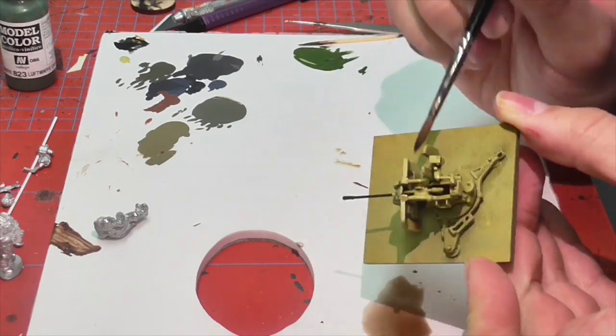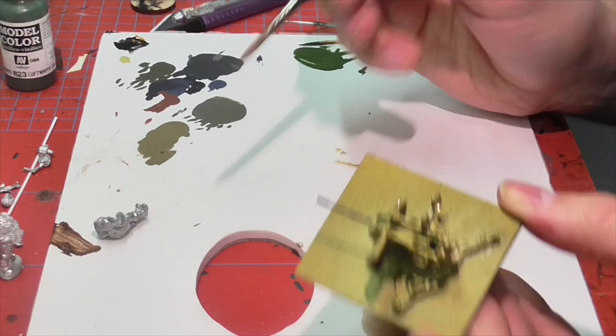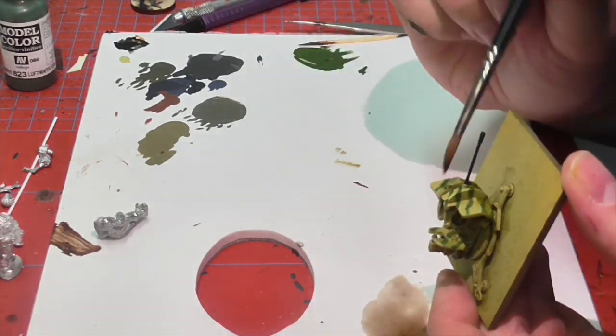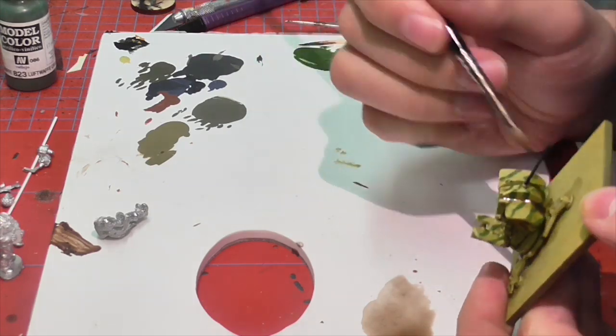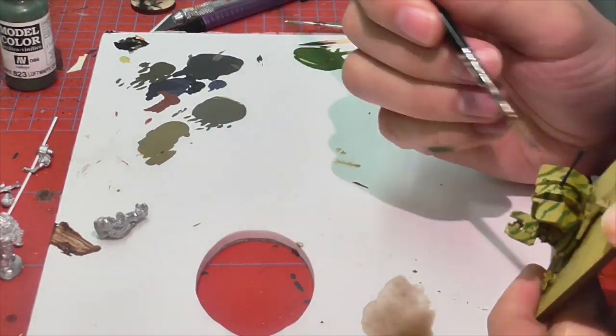And obviously you want to make sure you get plenty down in all of the recesses and areas where you would expect there to be really a lot of paint sticking and don't let it puddle or pool too much on any of the flat smooth surfaces because obviously that'll look bad later on.